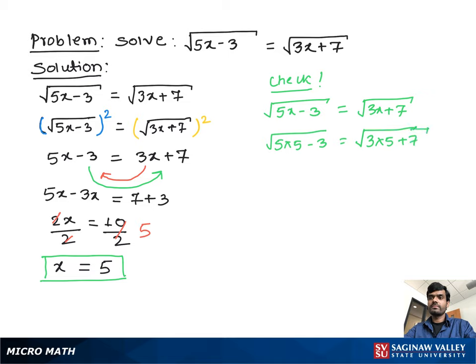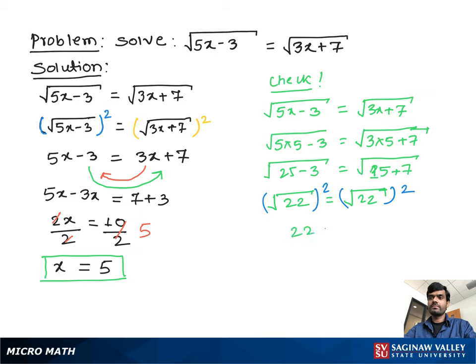Square root of (5 times 5 is 25, minus 3) equals square root of (3 times 5 is 15, plus 7). So square root of (25 minus 3) equals square root of 22, and square root of (15 plus 7) also equals square root of 22. Squaring both sides gives 22 equals 22. This confirms that x equals 5 is the solution for the equation.